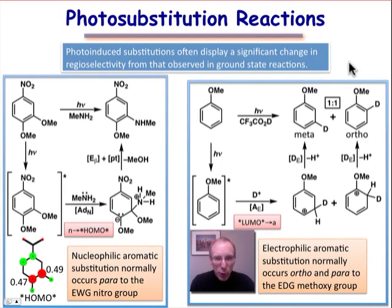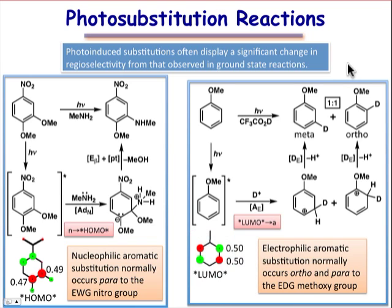One of the themes that we've seen in photochemistry is that under photochemical conditions, the thermal trends that we're used to are often reversed, and this theme is going to hold true again for the examples that we'll see here, which involve photosubstitution. On the left, we'll take a look at an example of nucleophilic aromatic substitution, and on the right, we'll take a look at an example of electrophilic aromatic substitution.